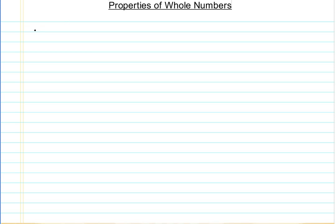If we look at the basic mathematical operations that we can do on numbers, those basic operations would be addition, subtraction, multiplication, and division. So these are the four basic operations that we can do.